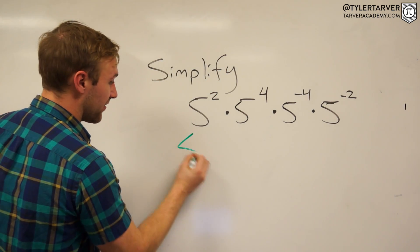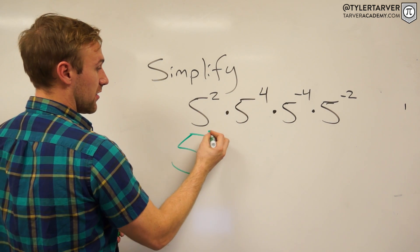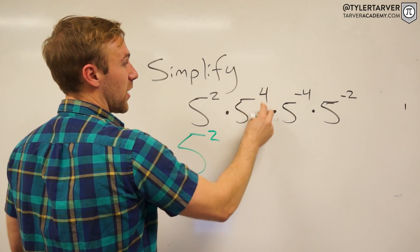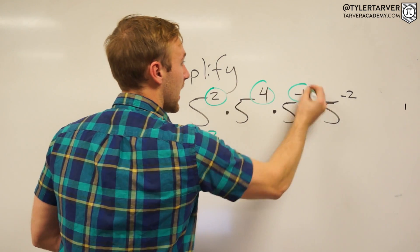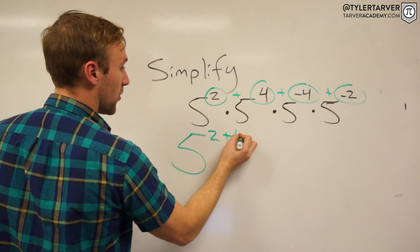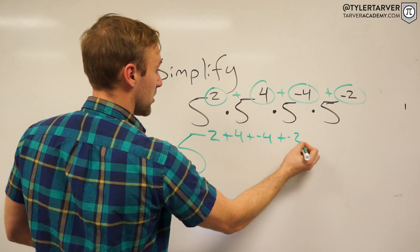So I can say this is five. I'm writing it big because I'm going to write these larger. And then we've got five squared. Now I'm going times the same number each time. So I can just take these and add all these together. So we've got two plus four plus negative four plus negative two.